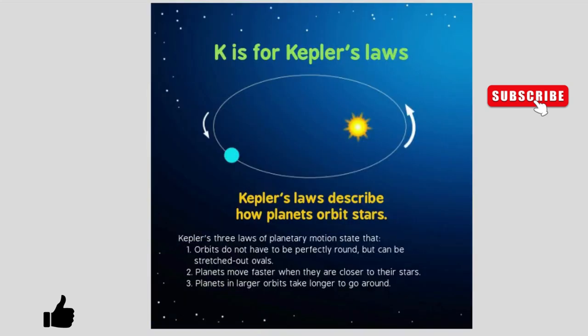K is for Kepler's laws. Kepler's laws describe how planets orbit stars. Kepler's three laws of planetary motion state that: 1. Orbits do not have to be perfectly round, but can be stretched-out ovals. 2. Planets move faster when they are closer to their stars. 3. Planets in larger orbits take longer to go around.